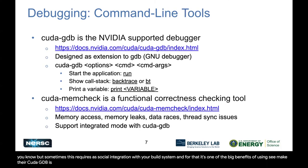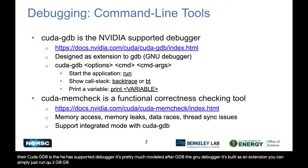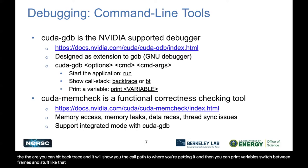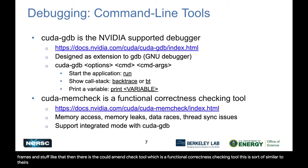CUDA-GDB is the NVIDIA-supported debugger. It's pretty much modeled after GDB, the GNU debugger, built as an extension. You simply run cuda-gdb with your command options and you will get an interactive prompt. You type 'run', and whenever you get the error, you can hit 'backtrace' and it will show you the call path to where you're getting the error. Then you can print variables and switch between frames.